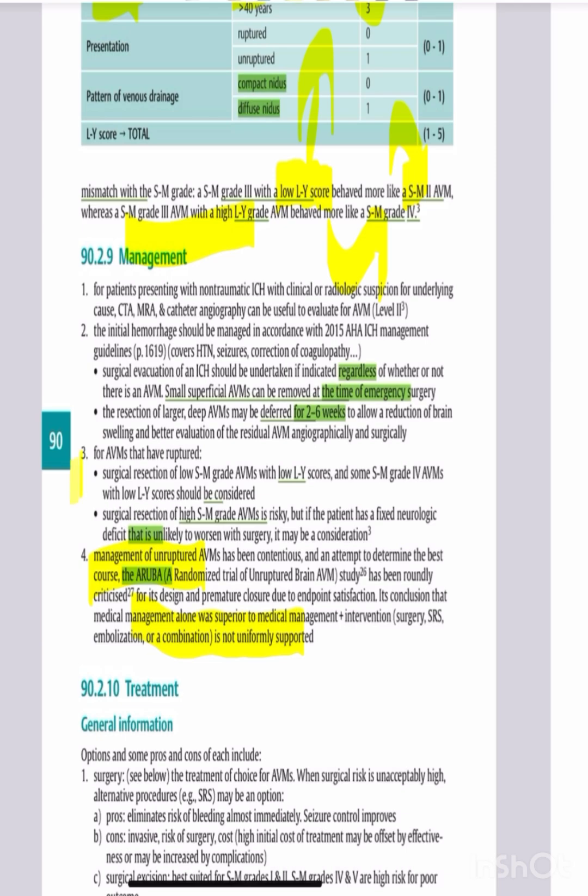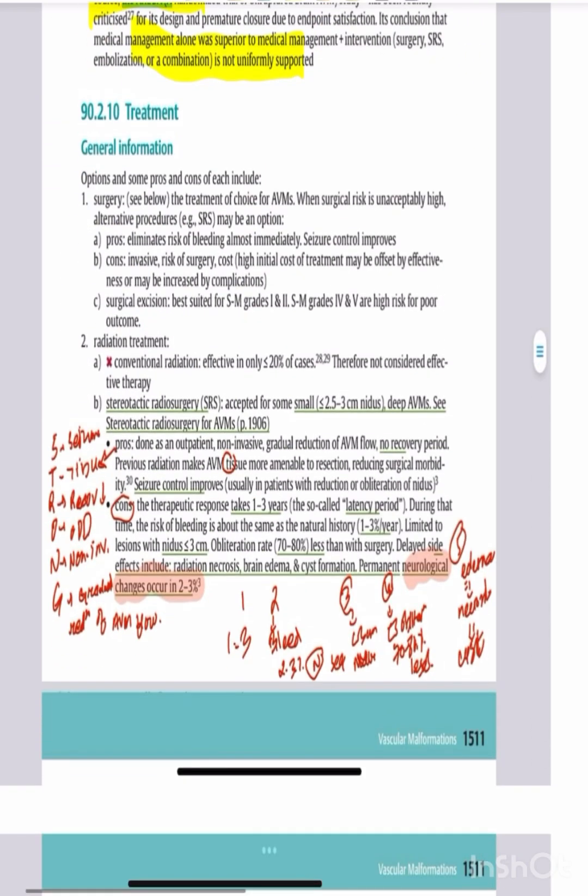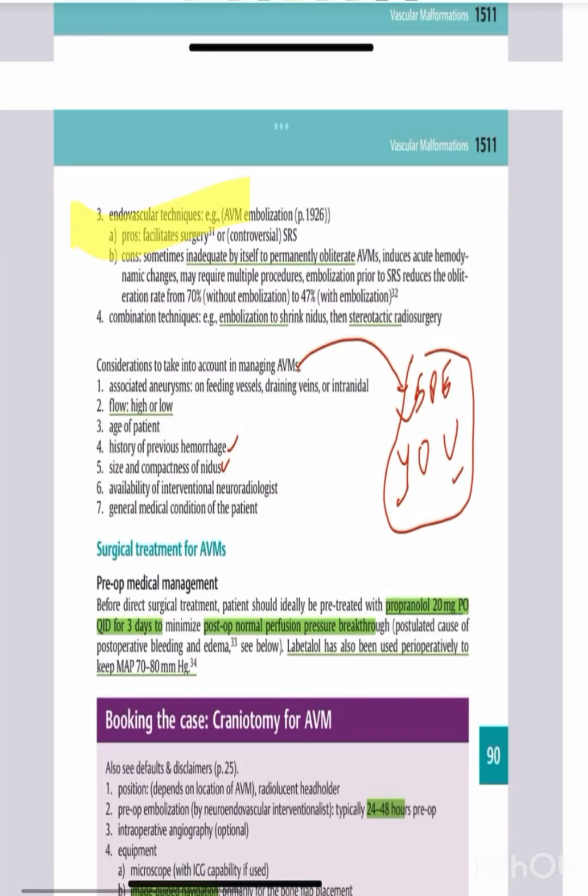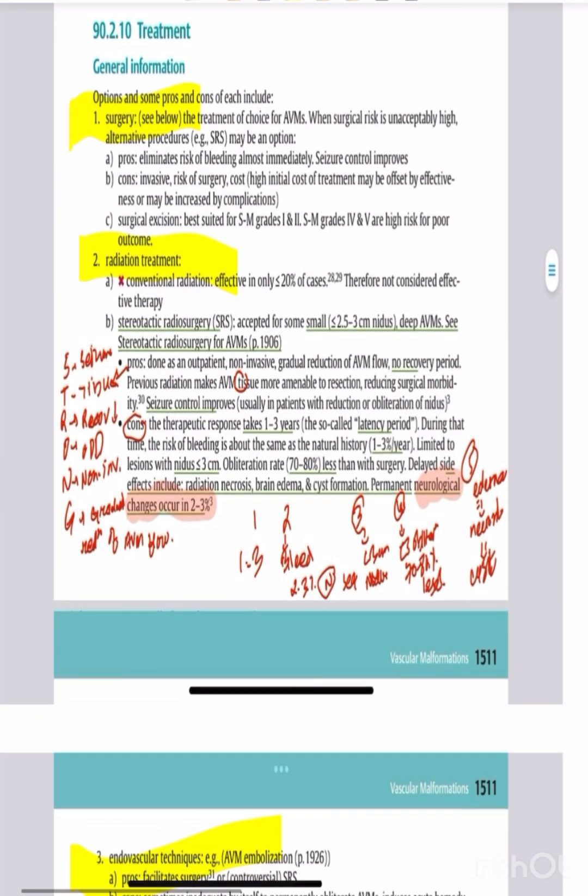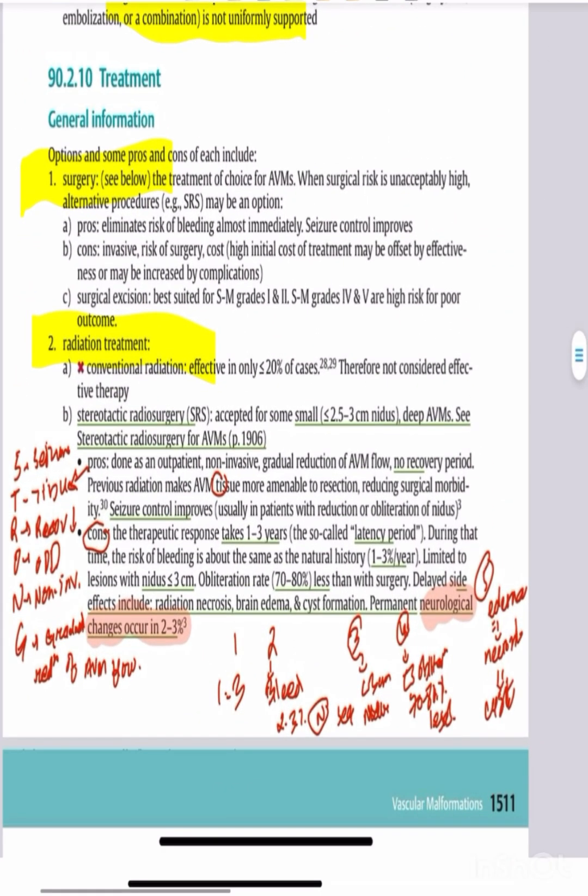For surgical resection, superficial AVMs with lower Spetzler-Martin grades are more amenable to surgery. The optimal timing for surgery is 2-6 weeks after initial hemorrhage. Treatment options include surgery, radiation, and endovascular embolization.